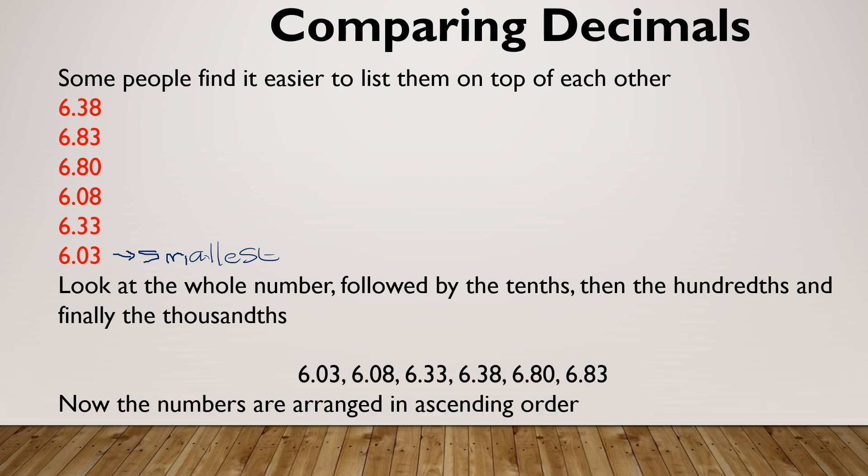And I would use my place value to help me. So this is the correct order: 6.03, 6.08, 6.33, 6.38, 6.80 and 6.83. So now that I've added zeros, I'm able to look at them better. And as we can see, this original one that looked like it was going to be the smallest is actually second largest.